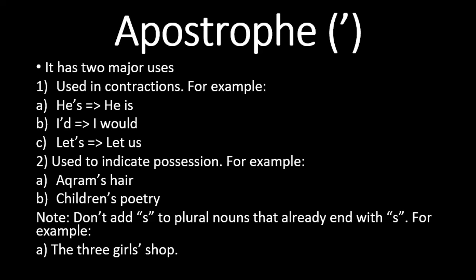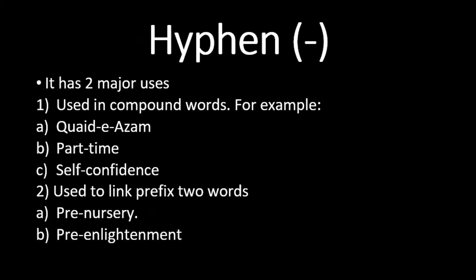Another example: 'children's poetry' means the poetry of children. An important note: for possession we add apostrophe plus 's', unlike contraction where only the apostrophe comma is used. However, if a word already ends in 's' — like a plural — we do not add an extra 's'. For example, 'the three girls' shop' — we just place an apostrophe after the existing 's' in 'girls'. So these were the two uses of apostrophe.